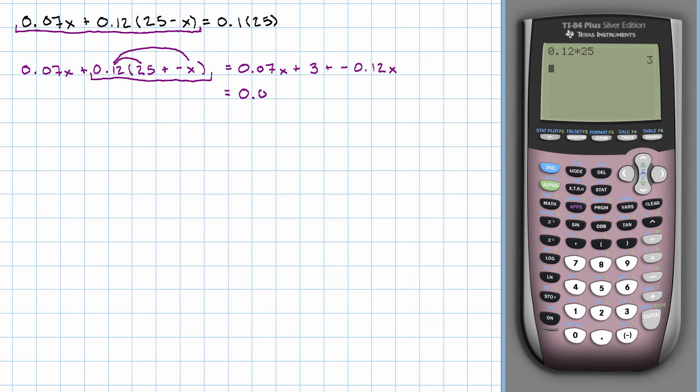So I've got 0.07x plus negative 0.12x plus 3. When I combine those, 0.07 plus negative 0.12x gives me negative 0.05x plus 3. Okay. That's my expression on the left simplified.